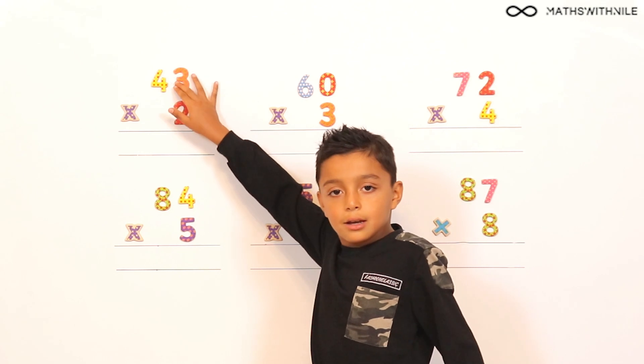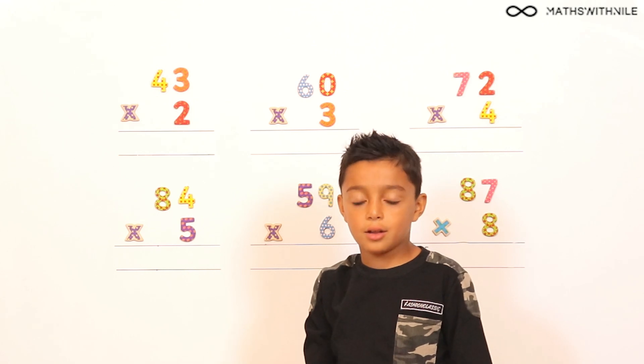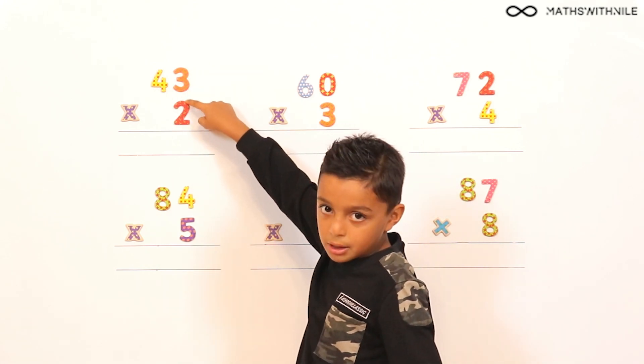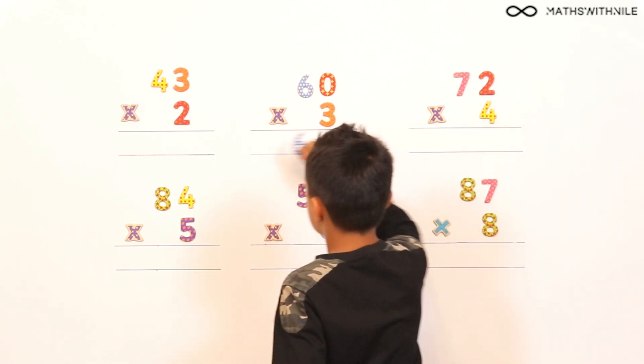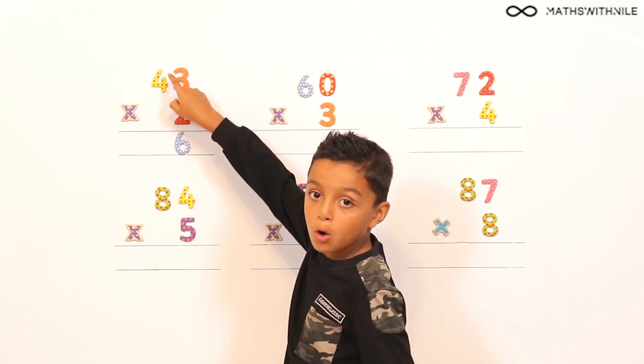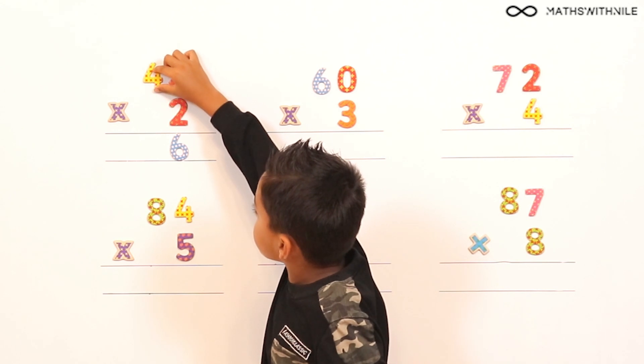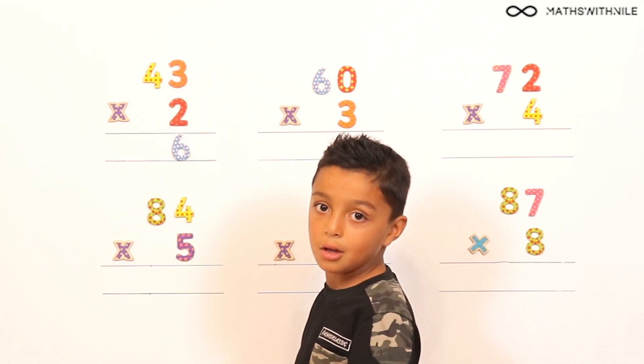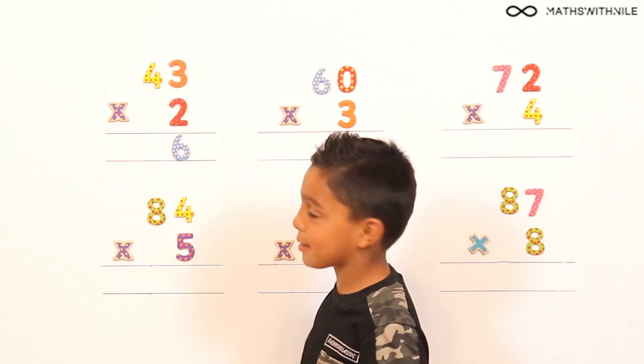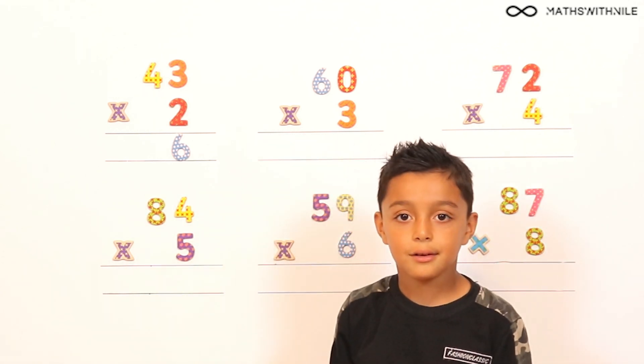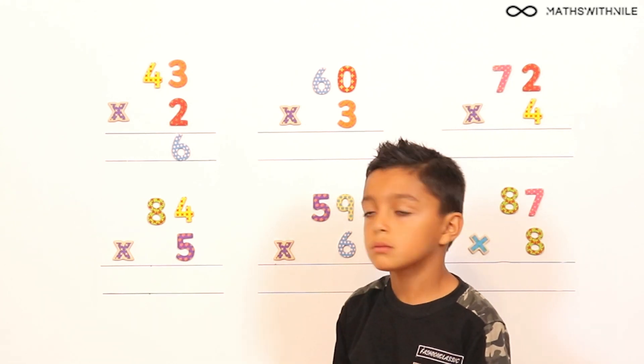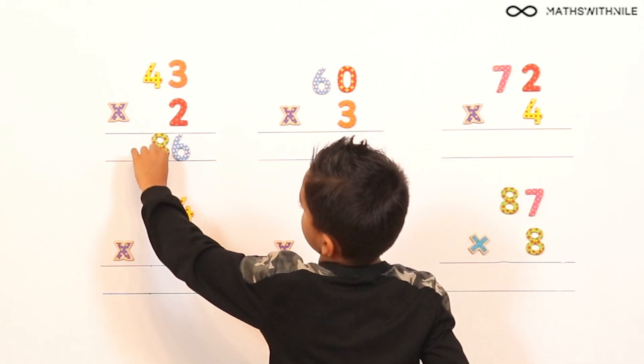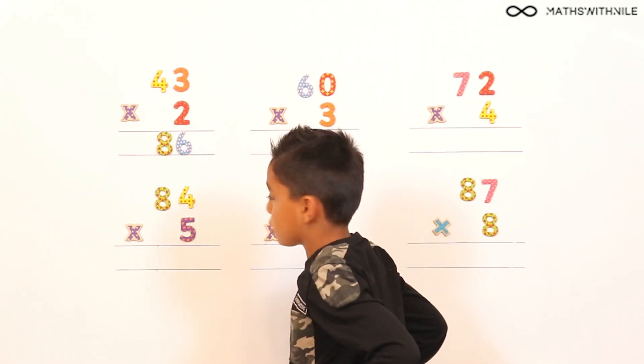So, the way you do it is you do 3 x 2. So what column are you starting with? Always start with the units. Okay, so you're going to start with the units column. 3 x 2. Yes, and 3 x 2 is 6. So that means I'll get a 6, I'll put it here and then we do the same but with the 4. 4 x 2. Okay, before you do the 4 x 2, how do you know where to put the 6?